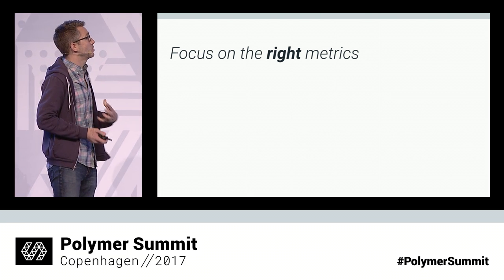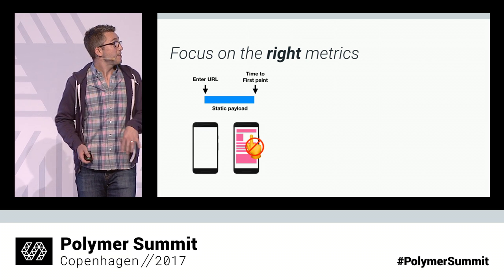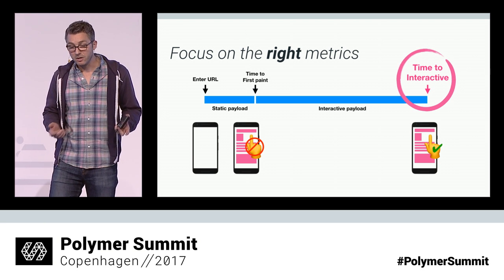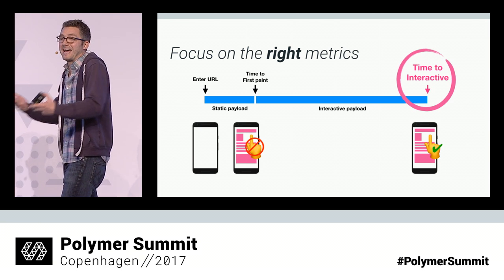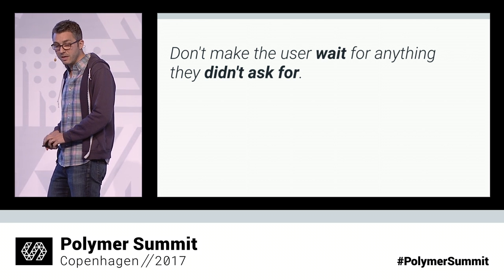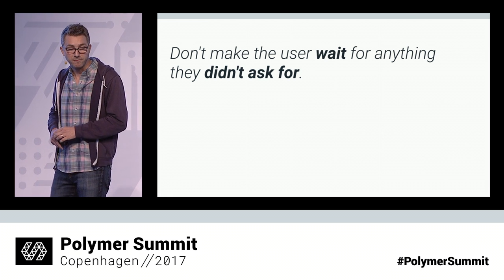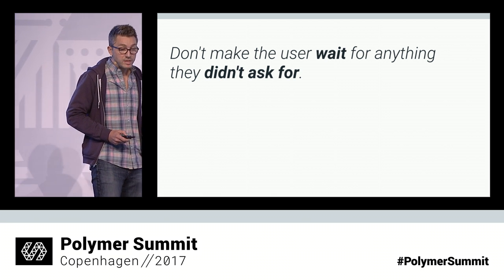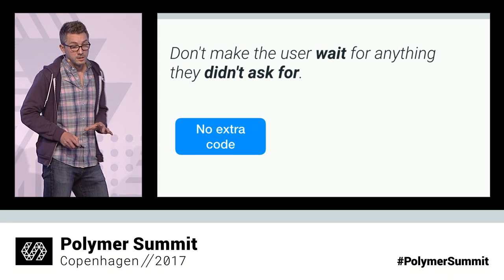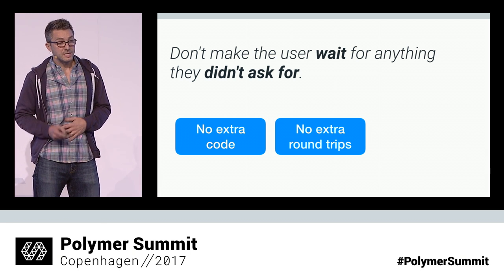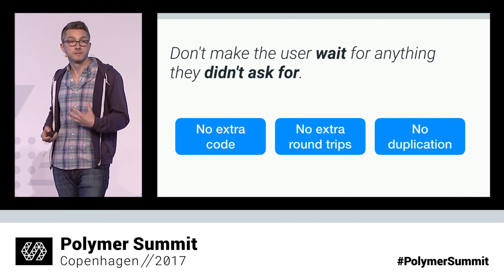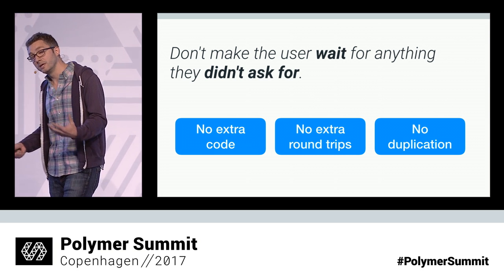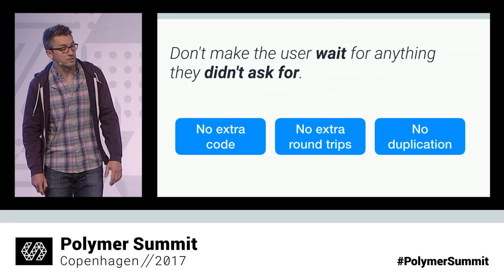We just have to be focusing on the right metrics. For a lot of applications, the right metric is probably not time to first paint, but time to interactive — the time until the user can actually do something on your site. The best way to ensure a good time to interactive is: don't make the user wait for anything they didn't ask for. Only send down what the route requires in as few round trips as possible, sending as little duplicate information as possible between routes.